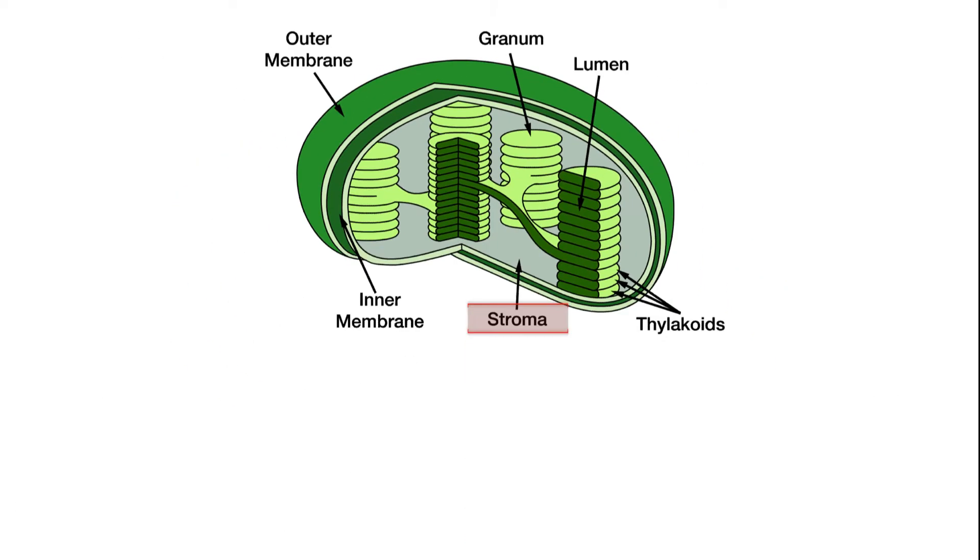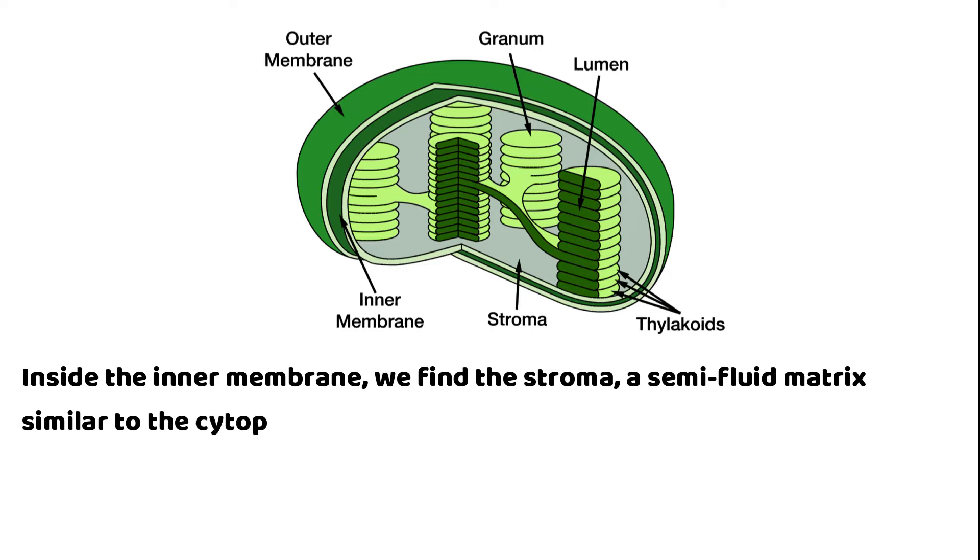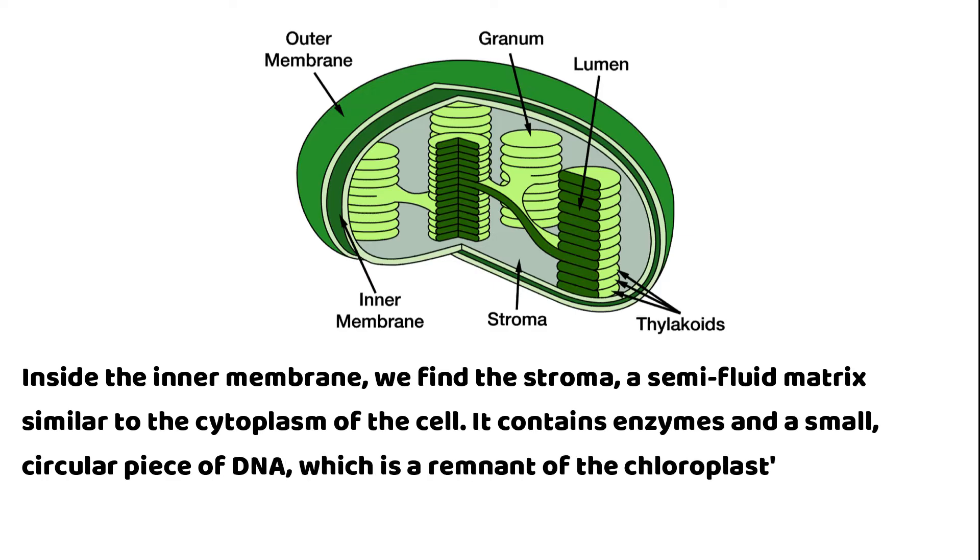Stroma: Inside the inner membrane, we find the stroma, a semi-fluid matrix similar to the cytoplasm of the cell. It contains enzymes and a small circular piece of DNA, which is a remnant of the chloroplast's evolutionary history as a free-living photosynthetic bacterium.